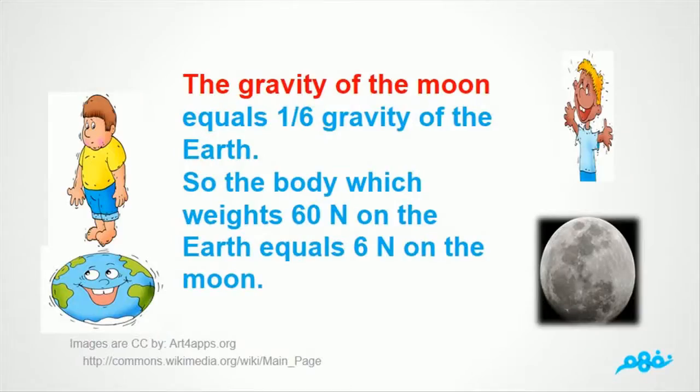The gravity of the Moon equals one-sixth gravity of the Earth. So the body which weighs 60N on the Earth equals 6N on the Moon.